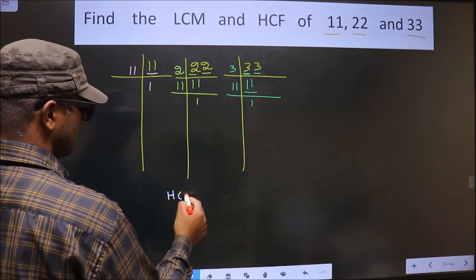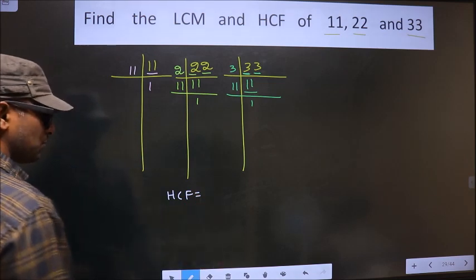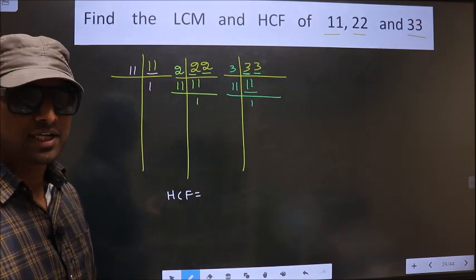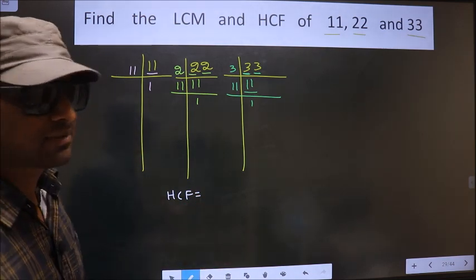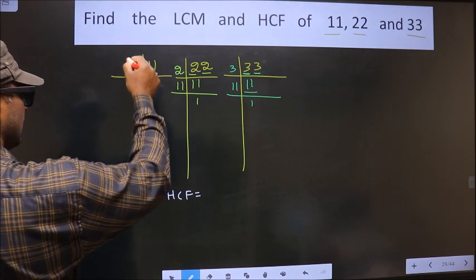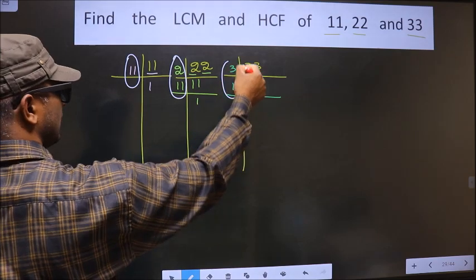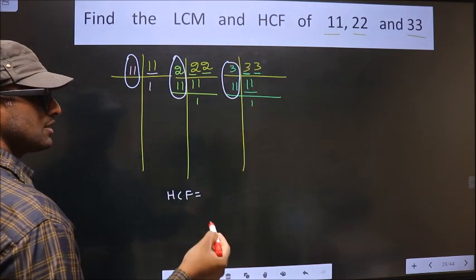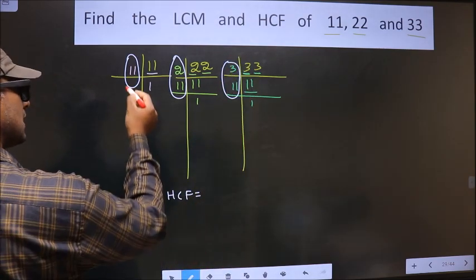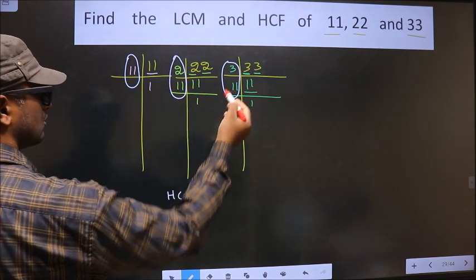So now our HCF is the product of numbers that are present here and here and also here. So now we should find the numbers that are present here, here and also here.